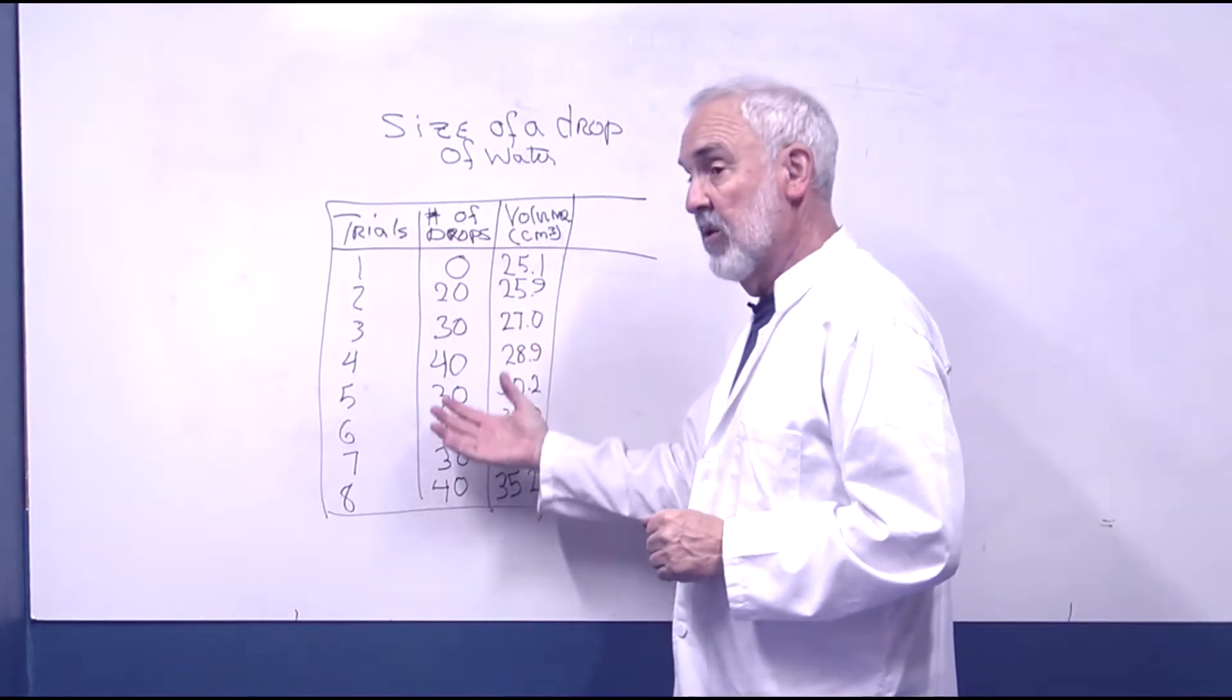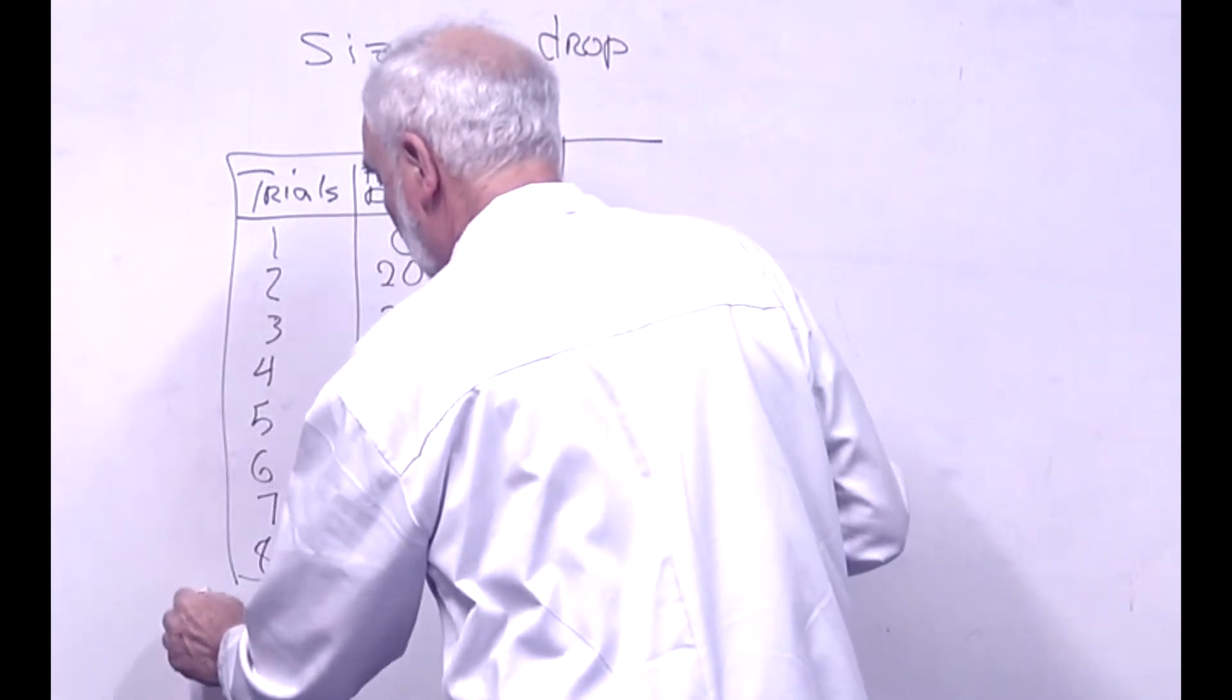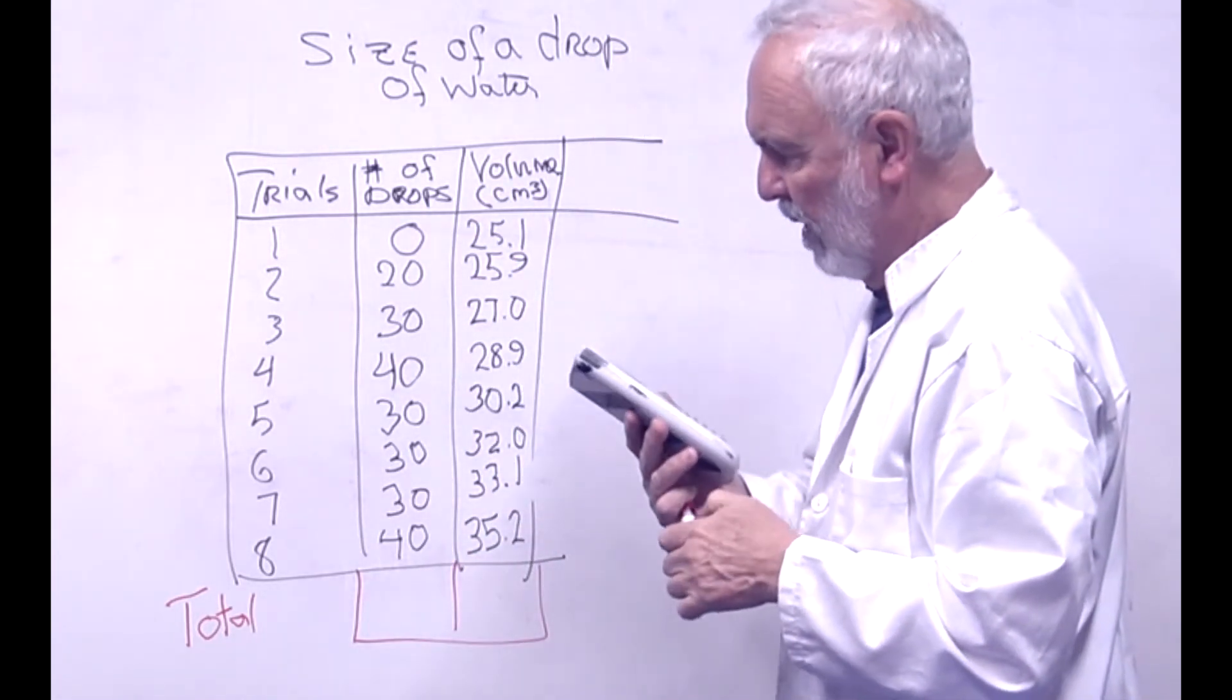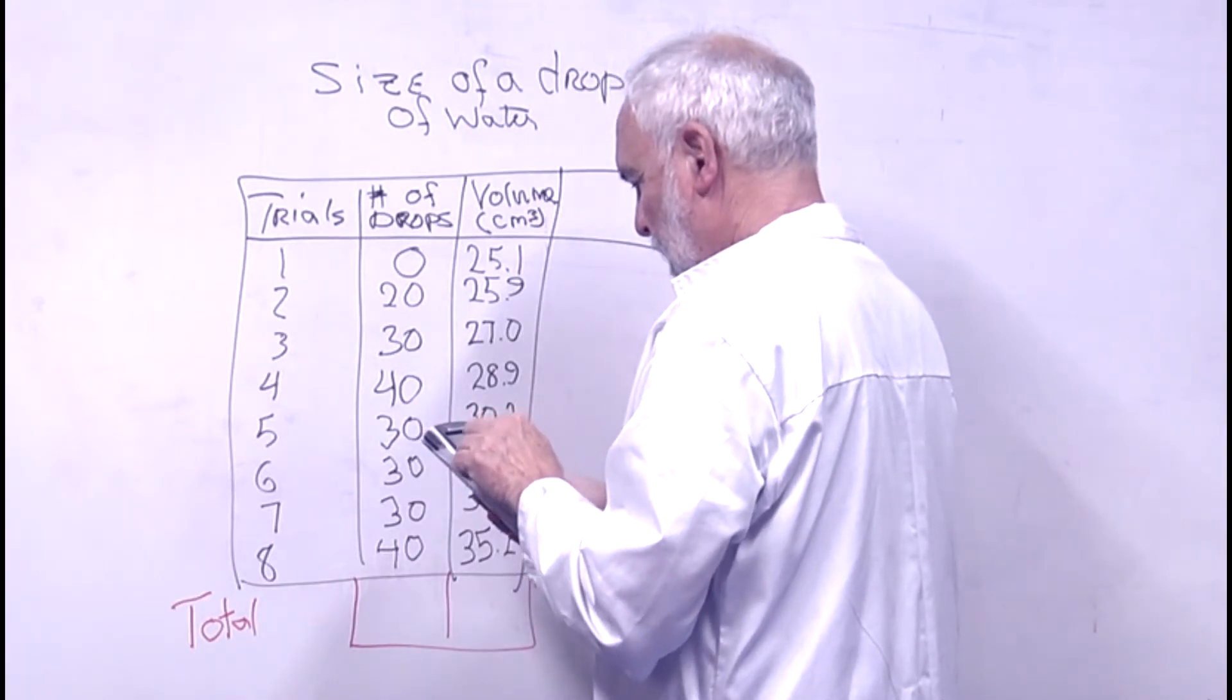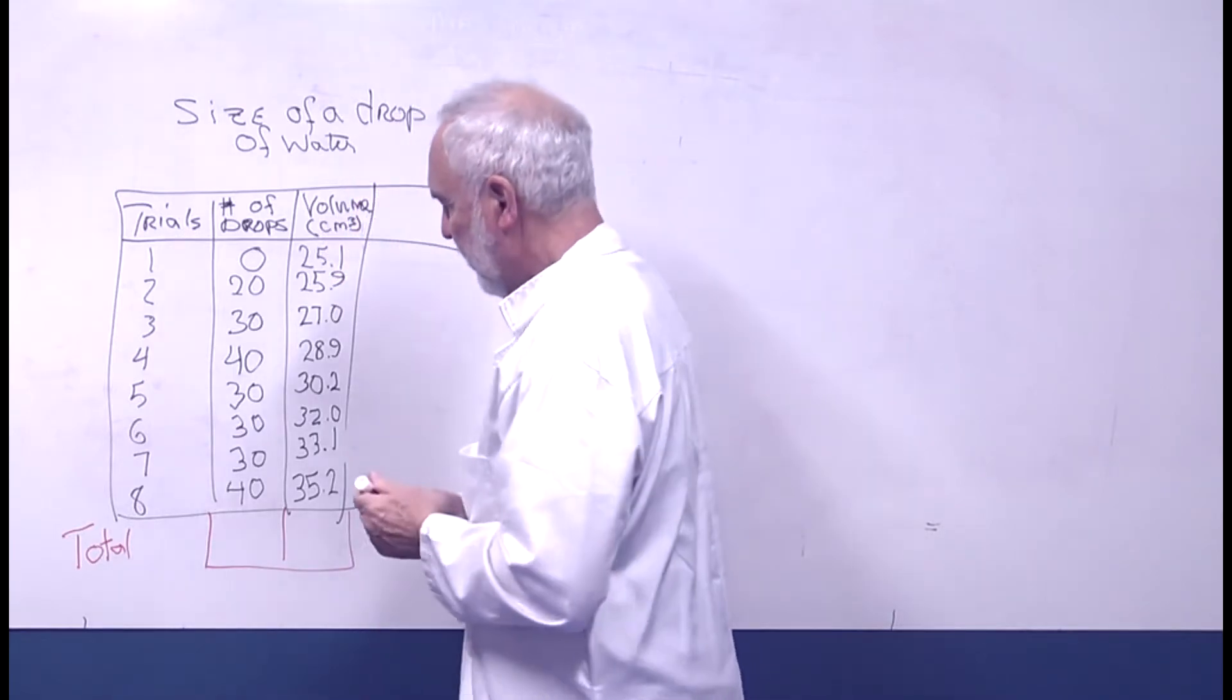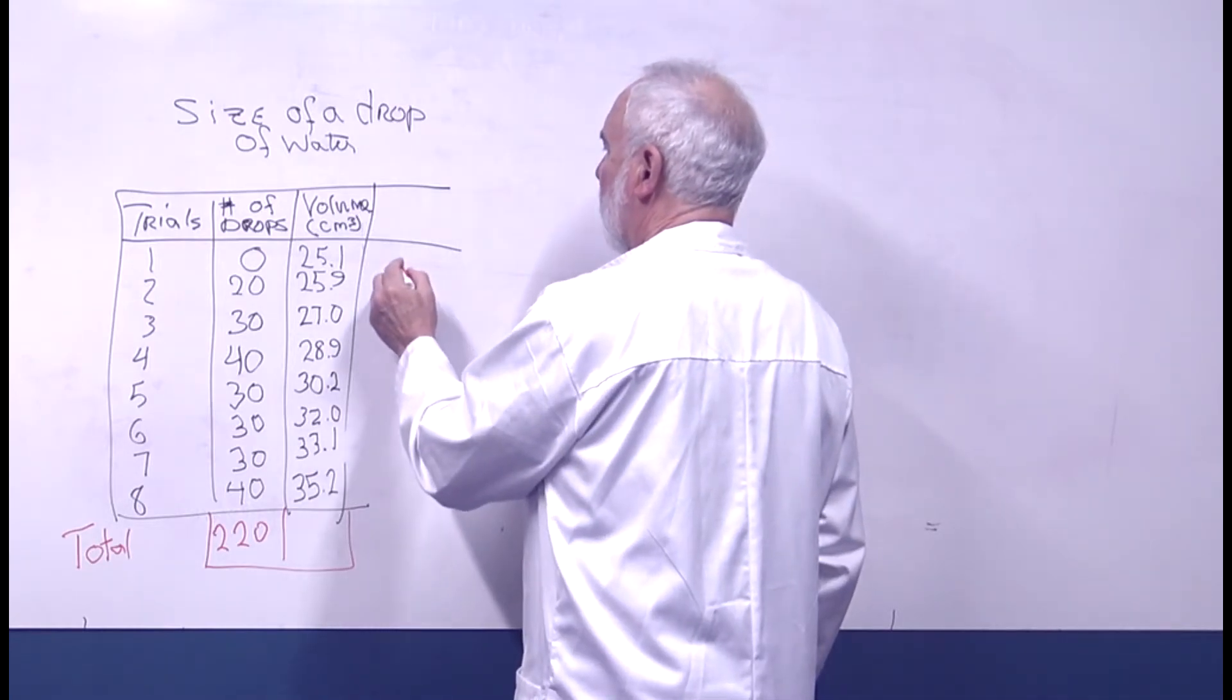Welcome back. I filled out my chart and then I can do some very simple calculations, such as what is the total number of drops and the total volume. The total number of drops is pretty straightforward. I just add these numbers together and we get 220 drops. The volume is a little different; I have to use a formula.